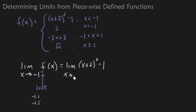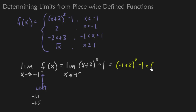That's actually the biggest mistake I find — people are not sure which function they're supposed to be using. Now that I've figured out the right function, I can plug in -1. So we get (-1 + 2)² - 1, that's (1)² - 1, which is 0. And that's the end of the problem — my limit is 0.